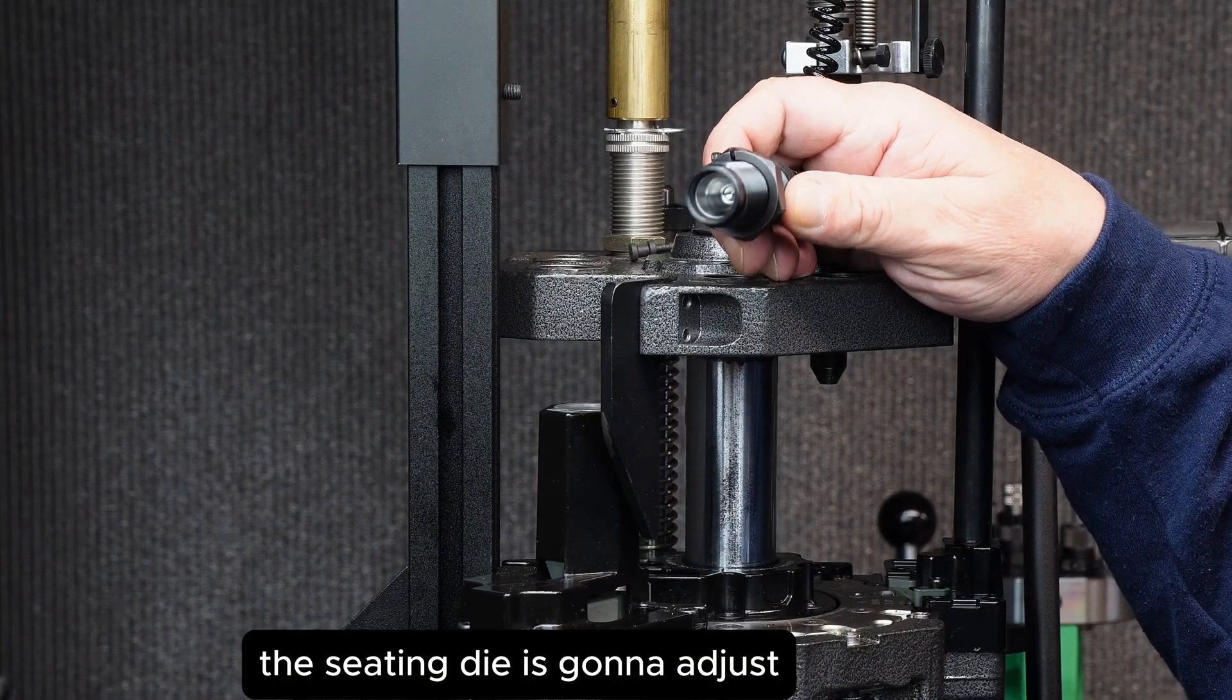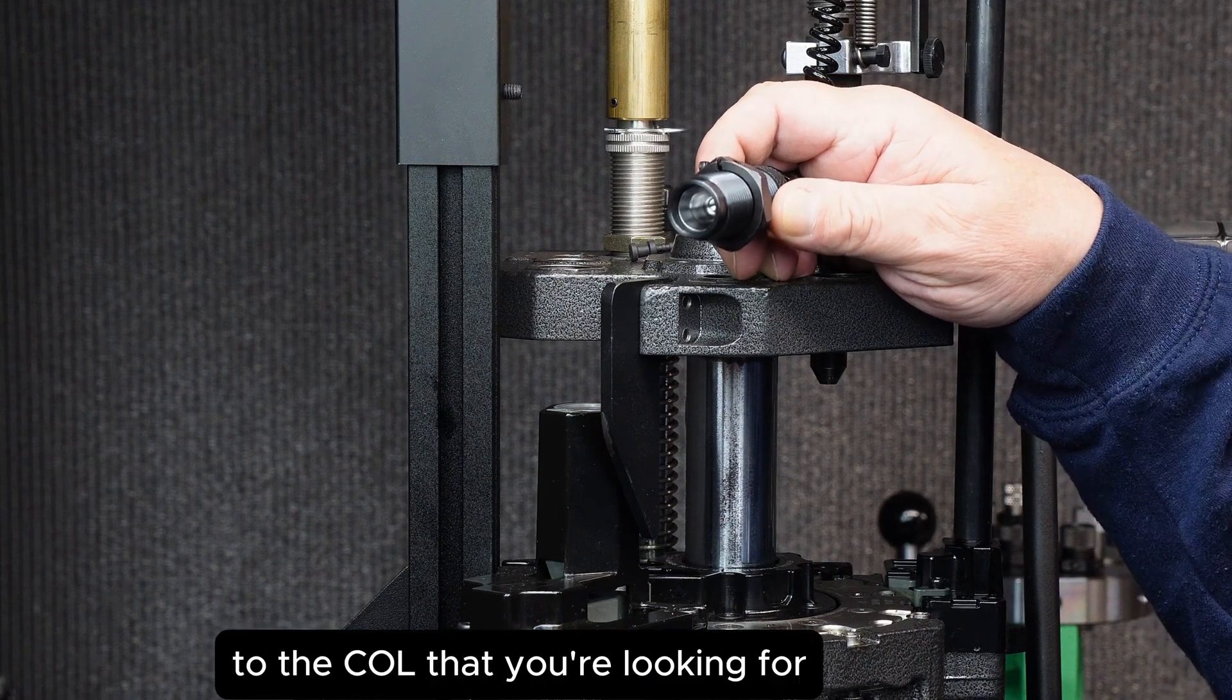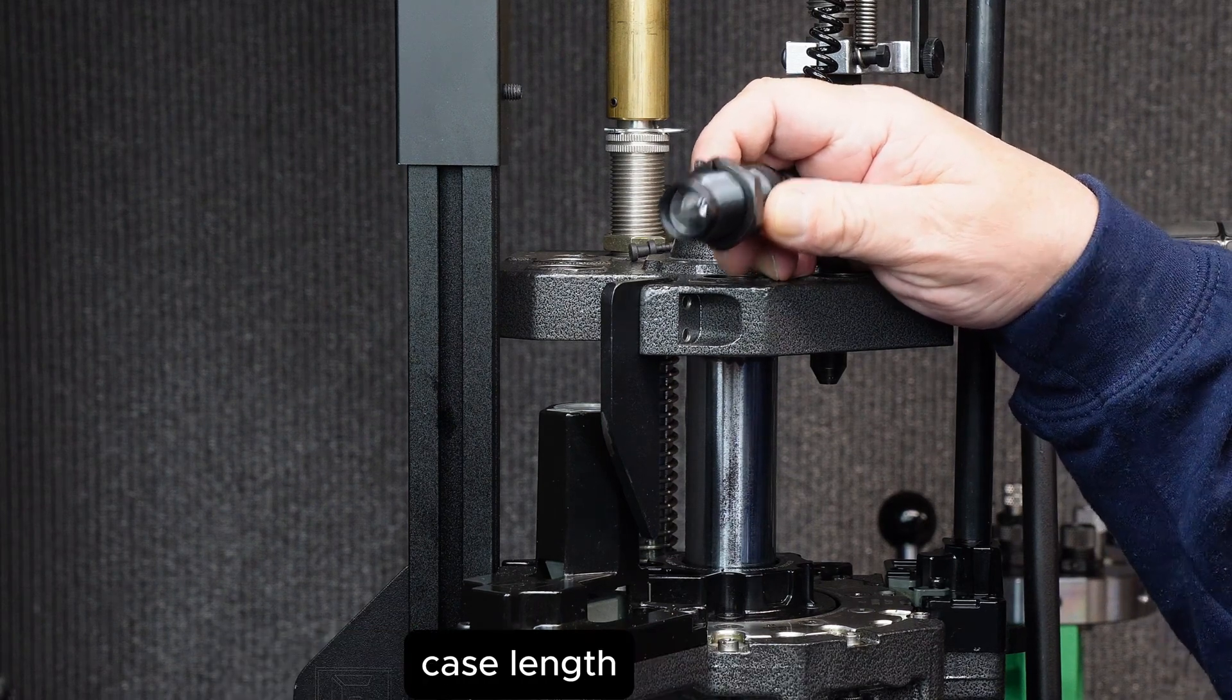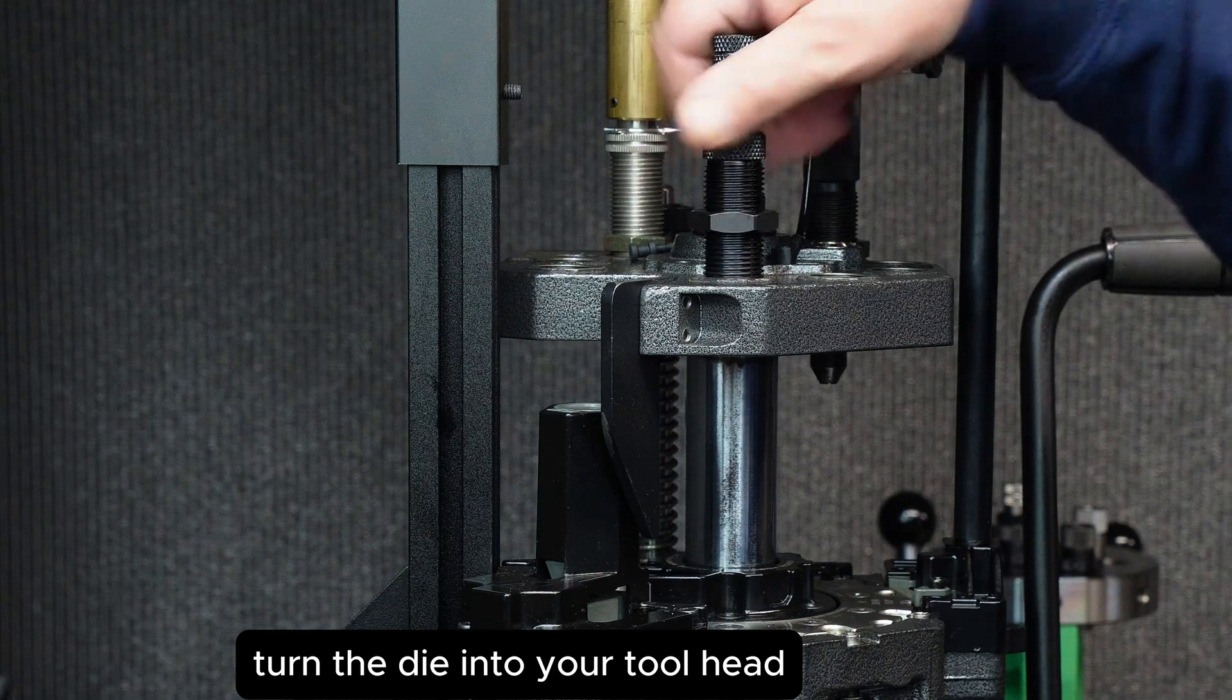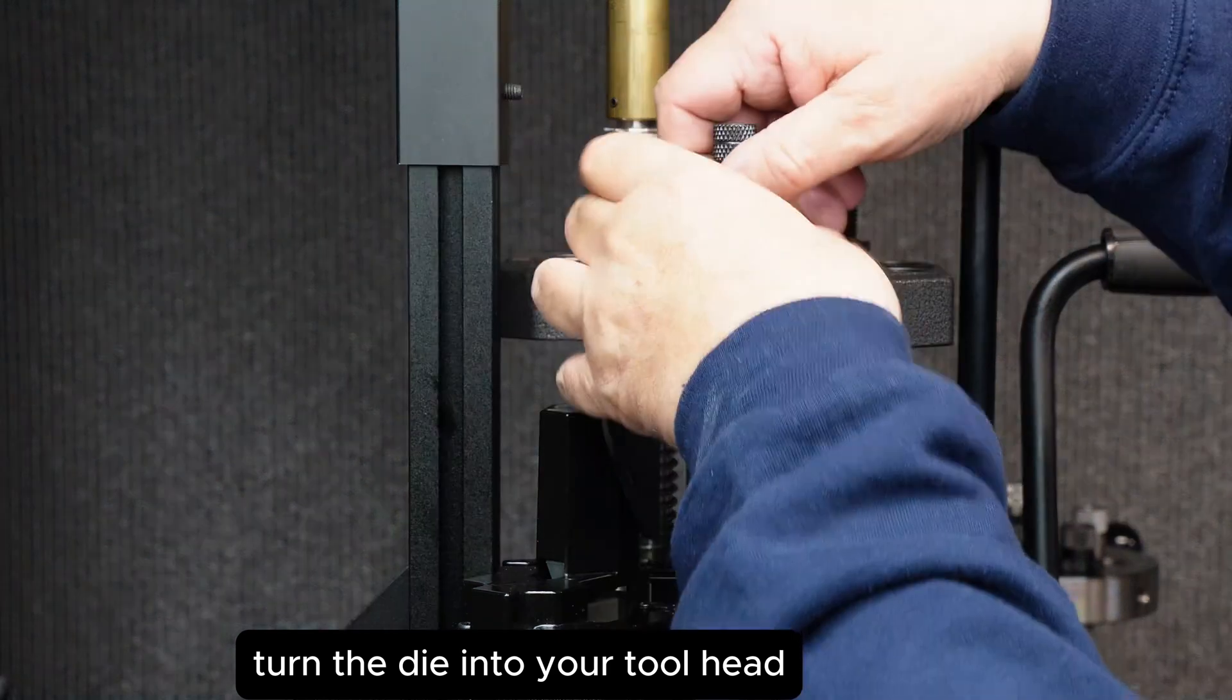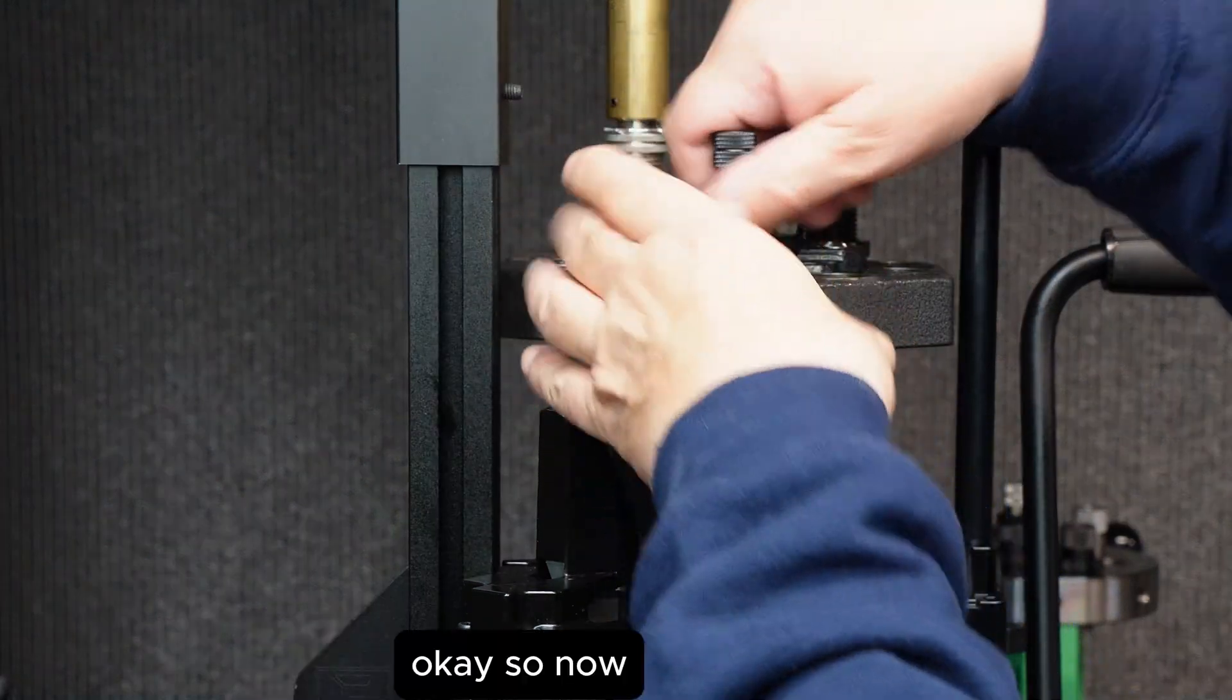Your seating die is going to adjust to the COL that you're looking for, your overall case length. You're going to turn the die into your tool head.